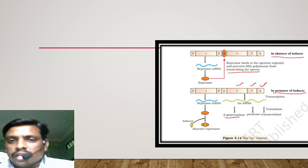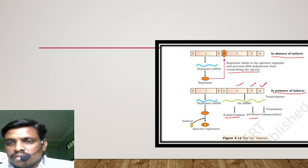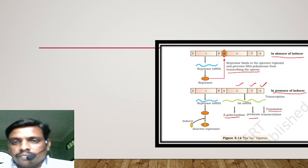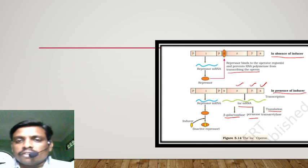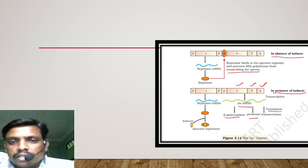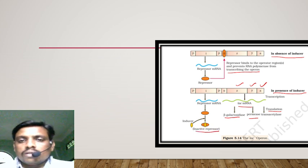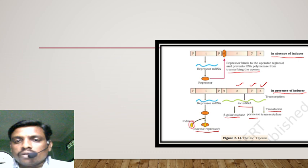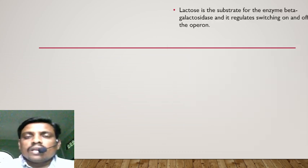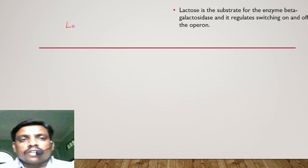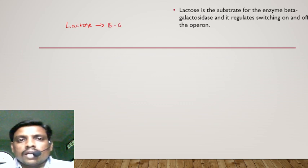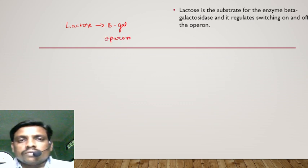In the presence of inducer, all three genes Z, Y, and A are expressed: Z codes for beta-galactosidase, Y codes for permease, and A codes for transacetylase. The lac mRNA (messenger RNA) is produced, and the inducer inactivates the repressor. Lactose is the substrate for beta-galactosidase, and this reflects the switching on and off of the operon.